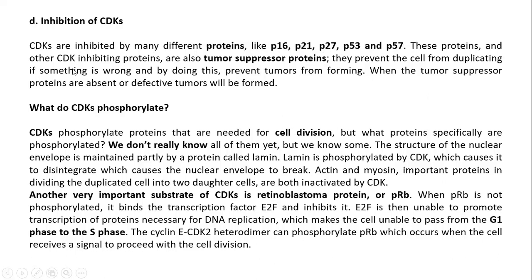These proteins and other CDK-inhibiting proteins are also called tumor suppressor proteins. In a tumor, there is unwanted, uncontrolled cell growth. So if we stop the cell division, we can prevent tumor formation. That is why these proteins are also called tumor suppressor proteins — they prevent the cell from duplicating if something goes wrong, thereby preventing tumor production.